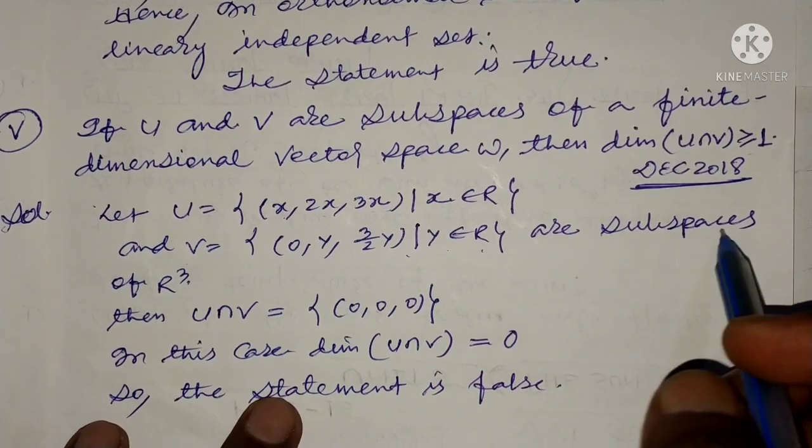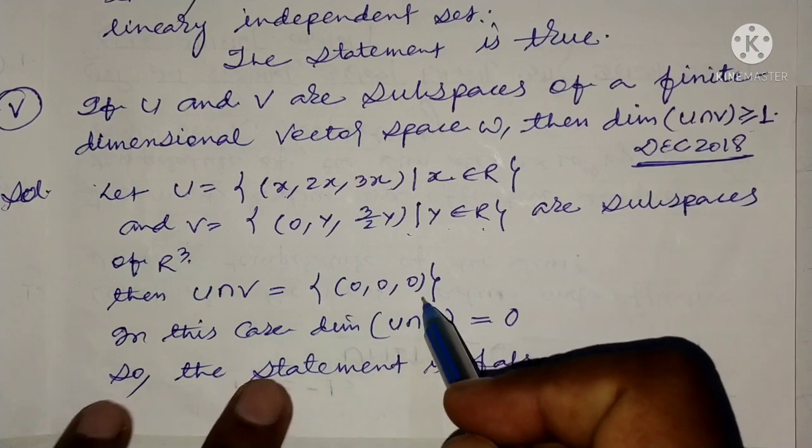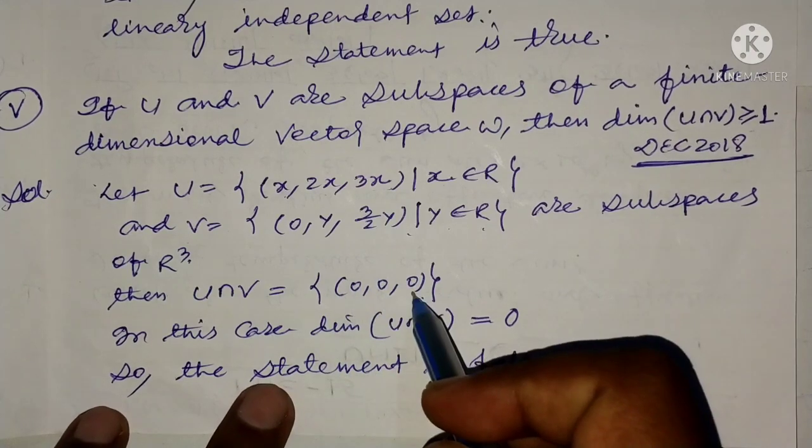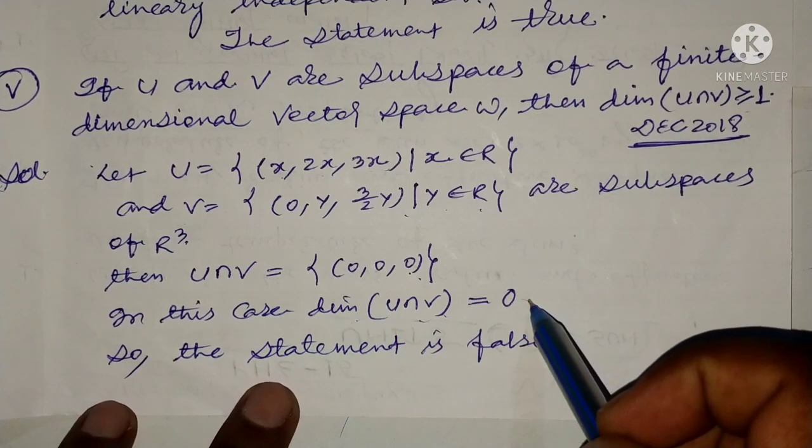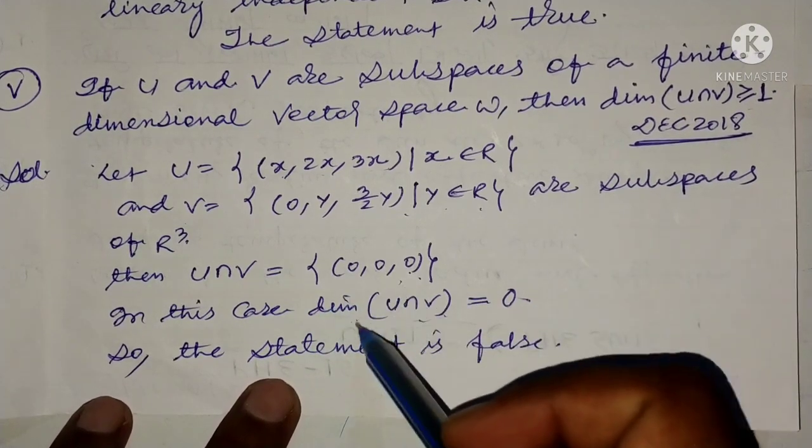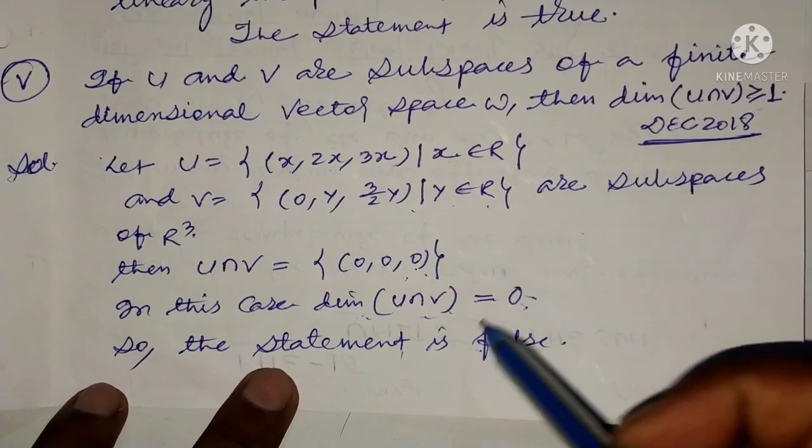These are subspaces of R³. Then U ∩ V equals only the zero vector. In this case, dimension of U ∩ V equals 0. Since the intersection has only the zero vector, dimension is 0. So the statement is false.